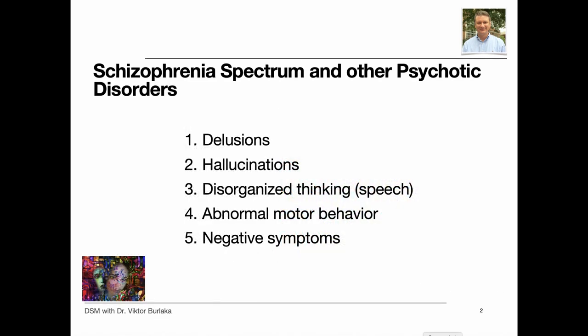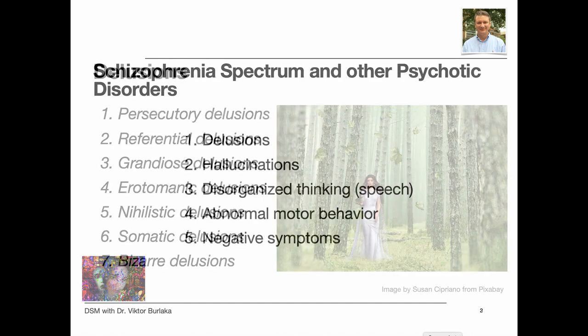Schizophrenia spectrum and other psychotic disorders are defined by abnormalities in one or more of the following five domains: delusions, hallucinations, disorganized thinking, speech, grossly disorganized or abnormal motor behavior including catatonia, and negative symptoms.